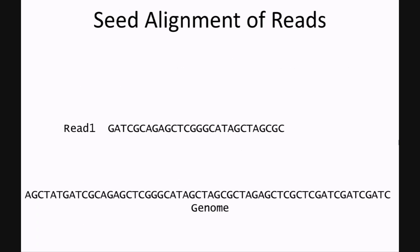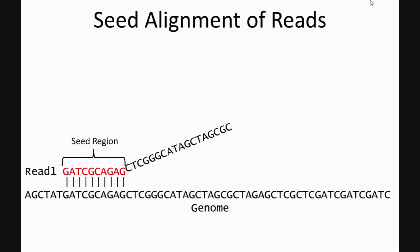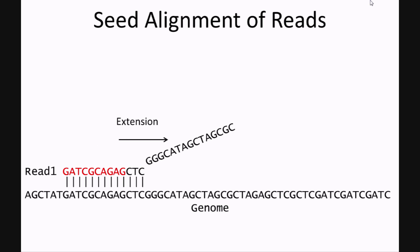The way Bowtie and BWA align reads is using seed-based alignment, in which you have a read and the five-prime end of the read will be designated as a seed region. You can typically dictate the length of this region in the mapping program. The aligner will then use the seed region to find a location in the genome for which to begin alignment, and then it extends this alignment to find where your read will most likely be mapping to. This is the general seed alignment and extension format for mapping.